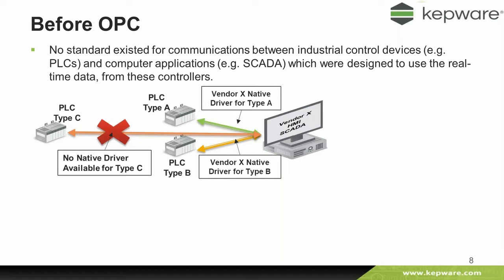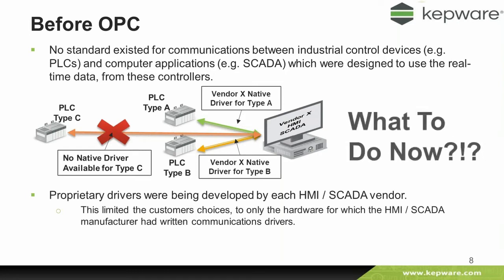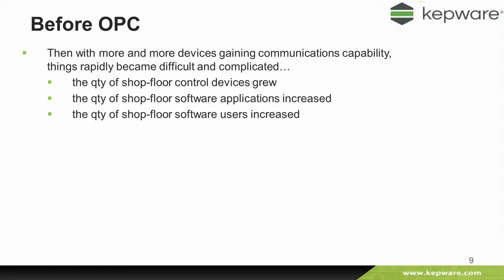What was happening is that people couldn't do what they needed to do. They couldn't choose a PLC independent of the SCADA — they needed everything to work together and have all the drivers they needed. On top of that, the SCADA people were spending a lot of their time writing drivers as new PLCs were launched, as new brands, ranges, series, and firmware came out. They were spending a lot of time writing drivers rather than improving the core functionality of their SCADA or ERP software. And more and more devices in the 90s were gaining communications capability, making things rapidly more complicated.